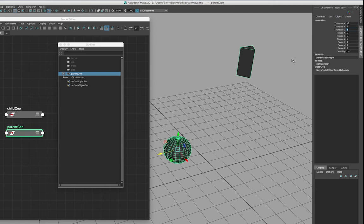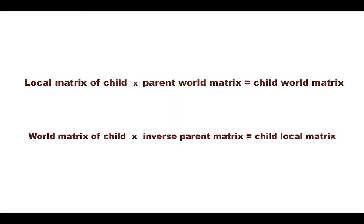Maya already provides the local and world matrices, but you can calculate it yourself and you might want to do so. If you'd like to find the world matrix of the child, you need to multiply the local matrix of the child with the parent's world matrix. Similarly, if you know the world matrix of the child and want to find the local matrix, you need to multiply the world matrix of the child with the inverse parent matrix. I'll get back to this in a minute.